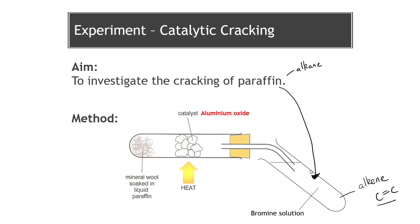However, if we undergo our cracking experiment - our cracking process where we essentially heat up the paraffin oil and also heat up the aluminium oxide, the catalyst in this experiment - then what happens is the paraffin starts to break down and produce the smaller, more useful products. Some gas is produced and passes through the tube, and that gas that comes out of the tube will turn the bromine solution clear and colourless.